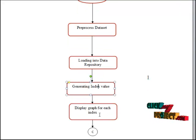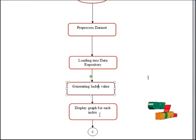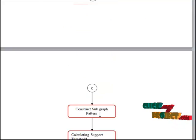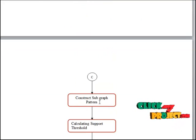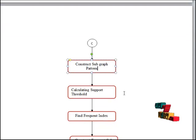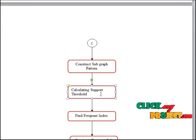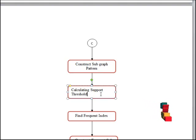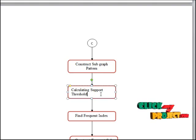Here, the index is essentially a candidate graph. We are going to display a graph for each index value, and then construct a subgraph pattern. Using this index value, we are going to construct a subgraph pattern, and then calculate the support threshold value. The subgraph patterns which satisfy this support threshold are used to find the frequent subgraph pattern. That is why we calculate the support threshold value.